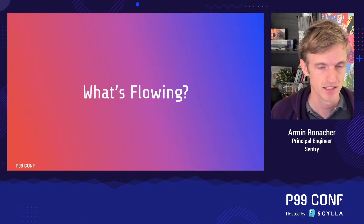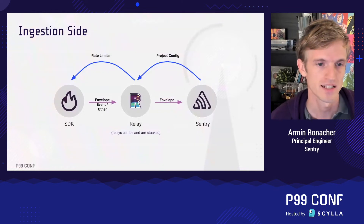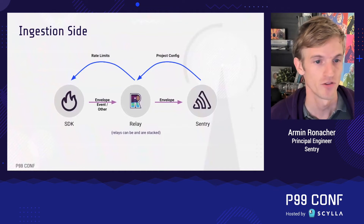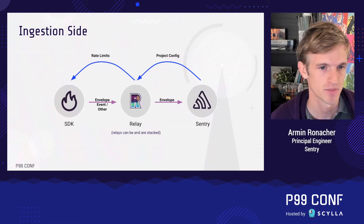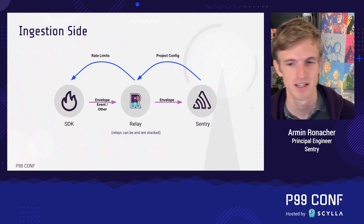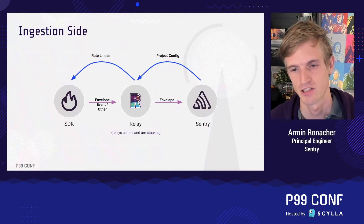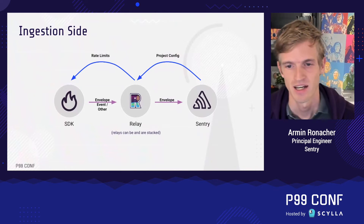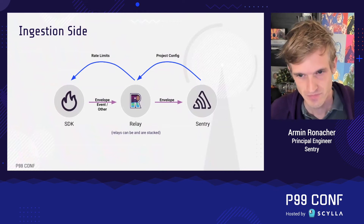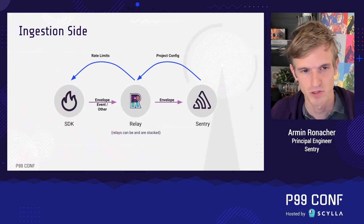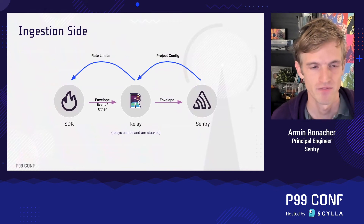There are basically two classes of formats coming in from SDKs. The preferred format is what we call an envelope — a format we created that wraps different types of data. A single HTTP request can contain different types of crash reports, a crash report together with a memory dump, a crash report with attachments, session updates, and so forth. Or it can be a native crash format — we can directly accept mini dumps at a mini dump endpoint, and we support Unreal crash reports directly at an Unreal crash report endpoint. Any time it hits a relay, that relay will transform it into an envelope and send it onward.